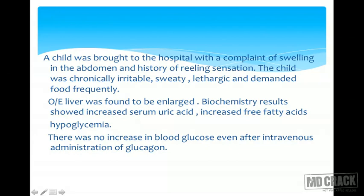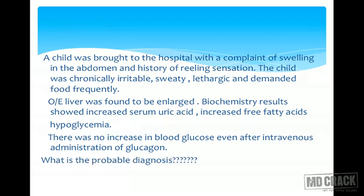The key finding: there was no increase in blood glucose even after intravenous administration of glucagon. Glucagon is supposed to stimulate glycogenolysis and raise blood glucose. Since this didn't happen, liver glycogenolysis is impaired. The probable diagnosis is Von Gierke's disease, a glycogen storage disorder.